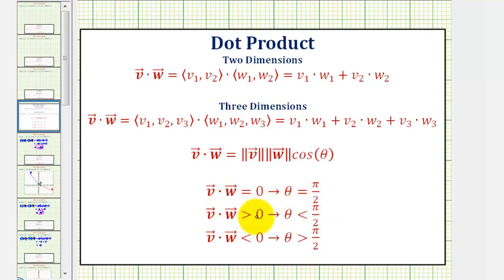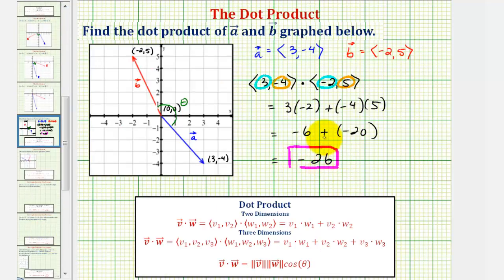If the dot product is positive or greater than zero, the angle theta is less than pi over two radians. If the dot product is negative or less than zero, the angle theta is greater than pi over two radians. Going back to our example, our dot product is negative, which indicates theta is greater than pi over two radians — we have an obtuse angle between vector A and vector B, which we can confirm from the graph.